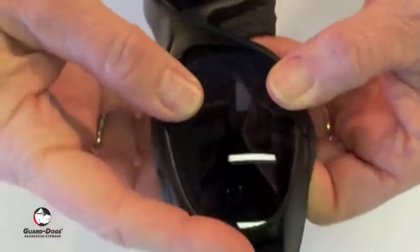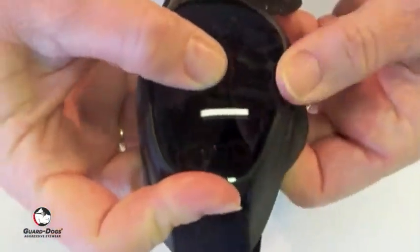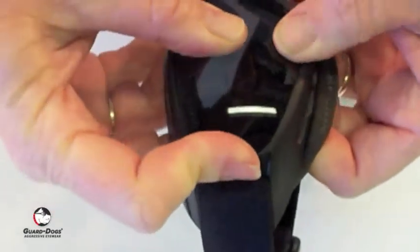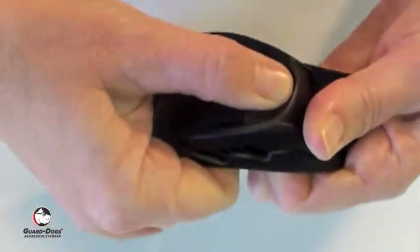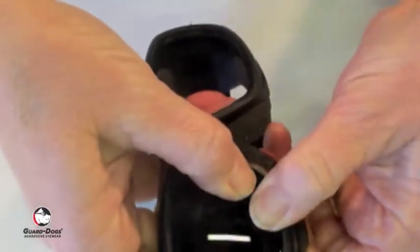You can put it in two ways also. Start at the bridge. Make sure you get the lens into the groove all the way around, and then snap it in out by the strap and at the bottom.